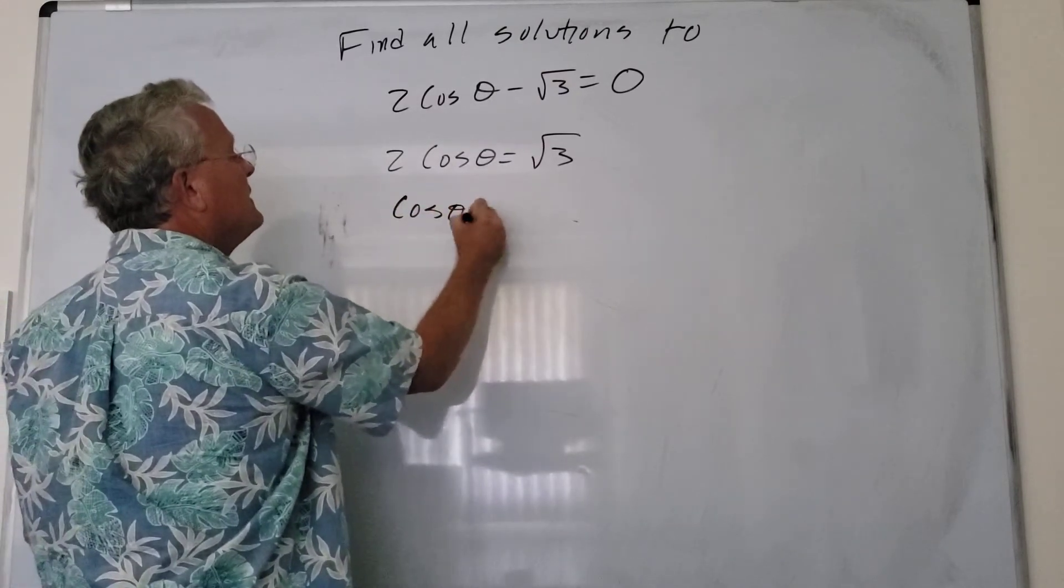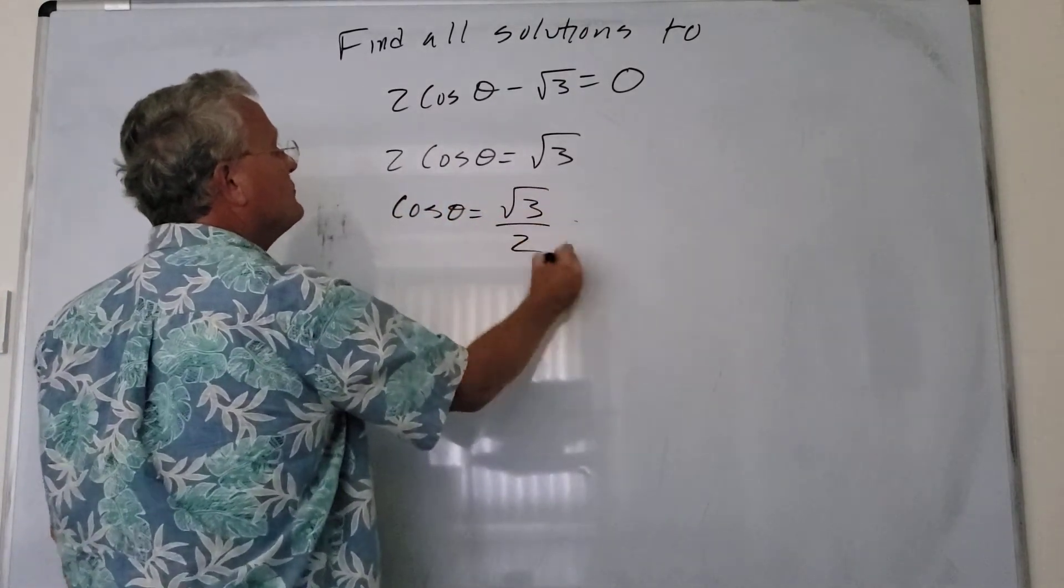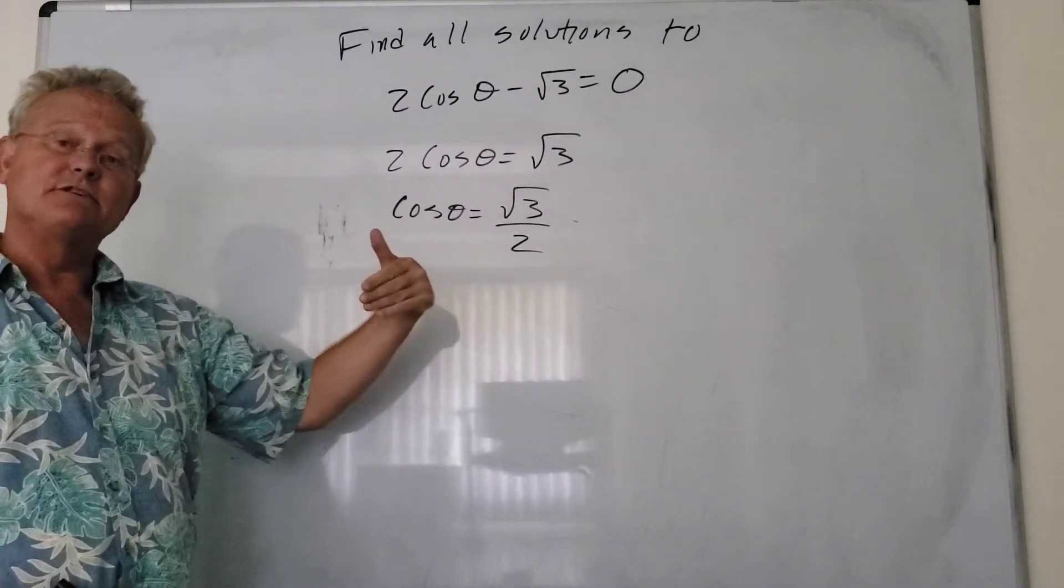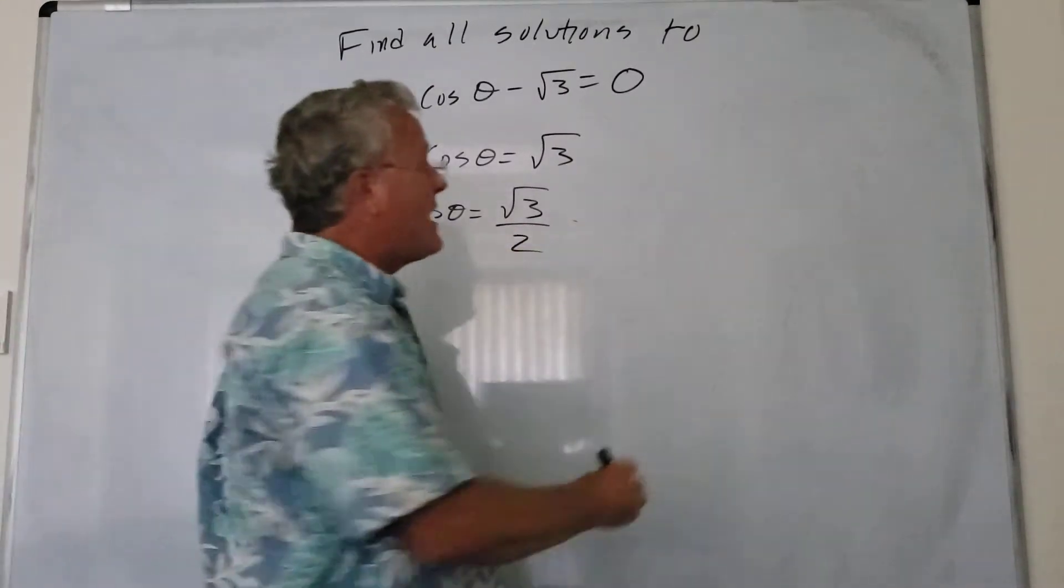and we get cosine theta equals root 3 over 2. Now we know that cosine is positive in the first and the fourth quadrant.